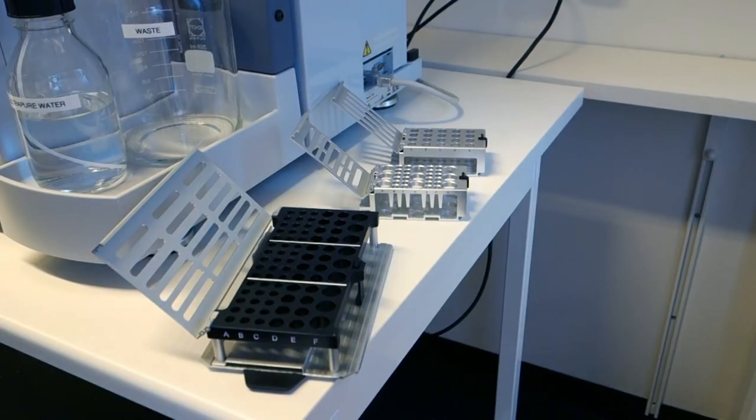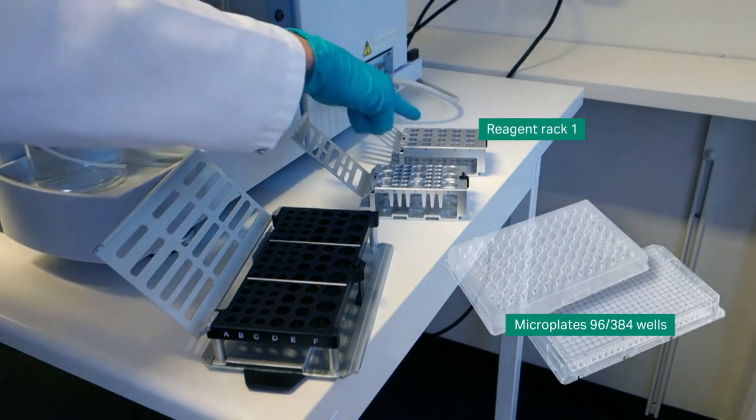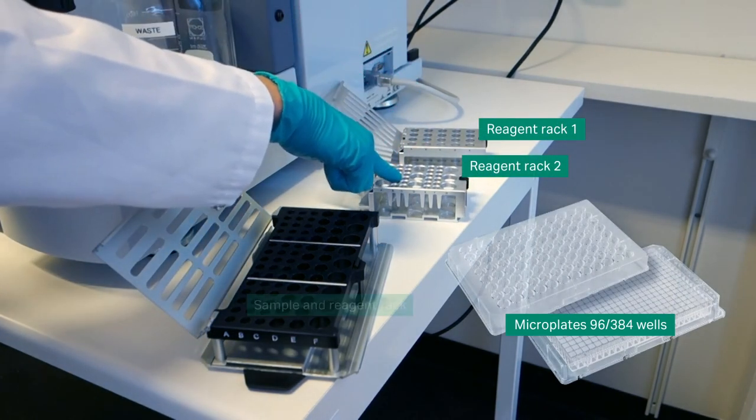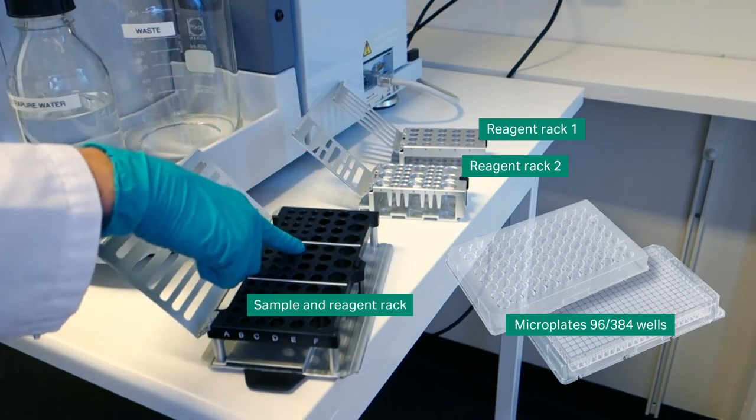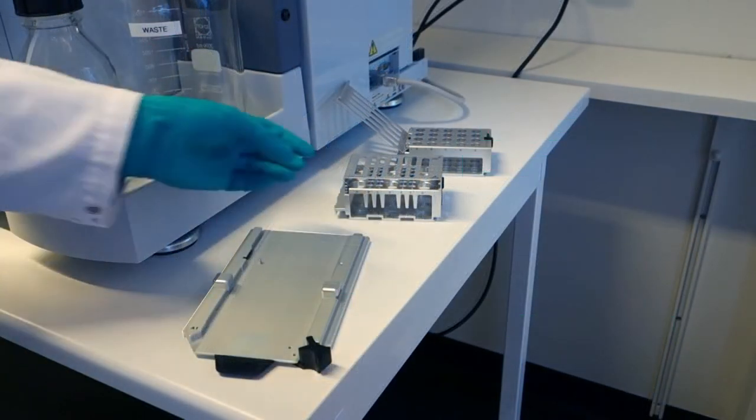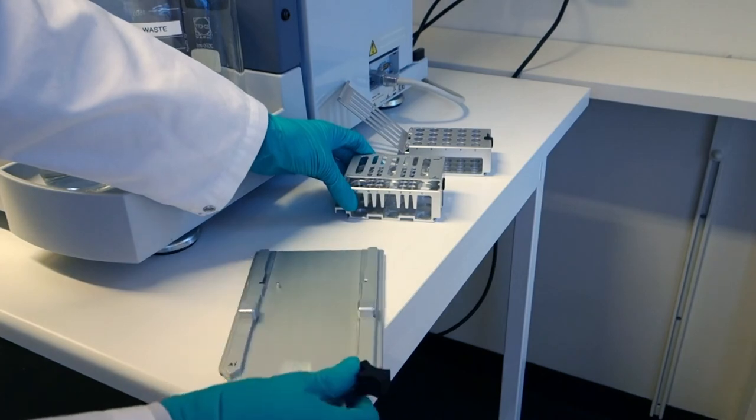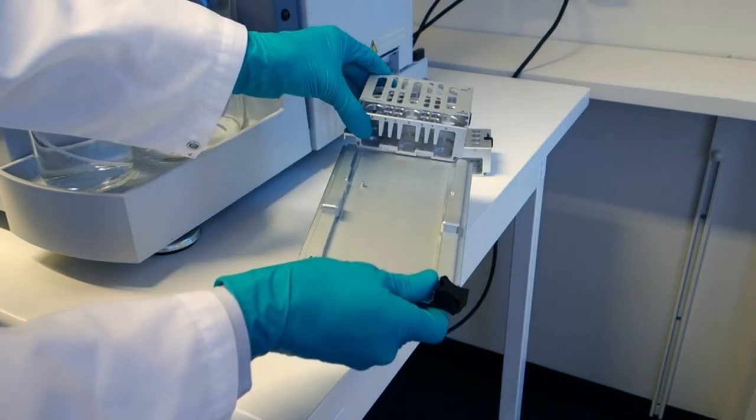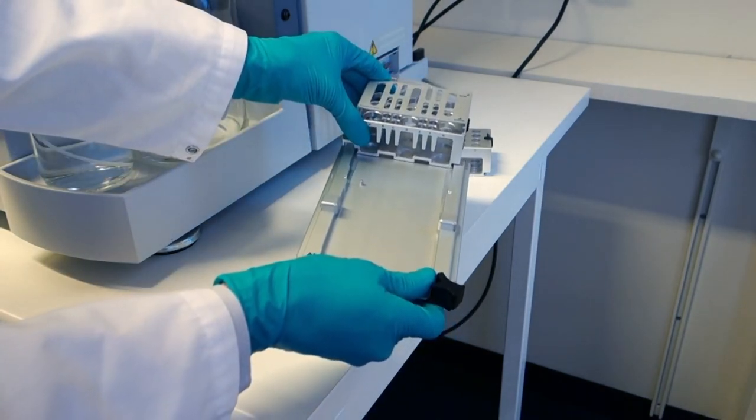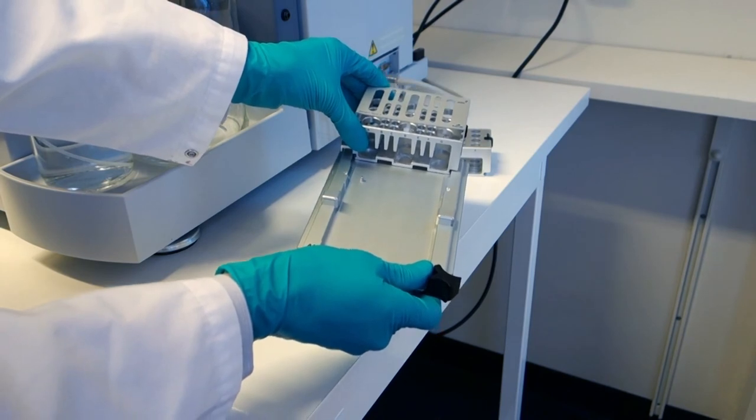Three different racks can be used in Biacore T200: Reagent Rack 1, Reagent Rack 2, and Sample and Reagent Rack. Reagent Rack 1 and 2 have to be placed on a removable tray that carries one of the reagent racks and or a microtiter plate.